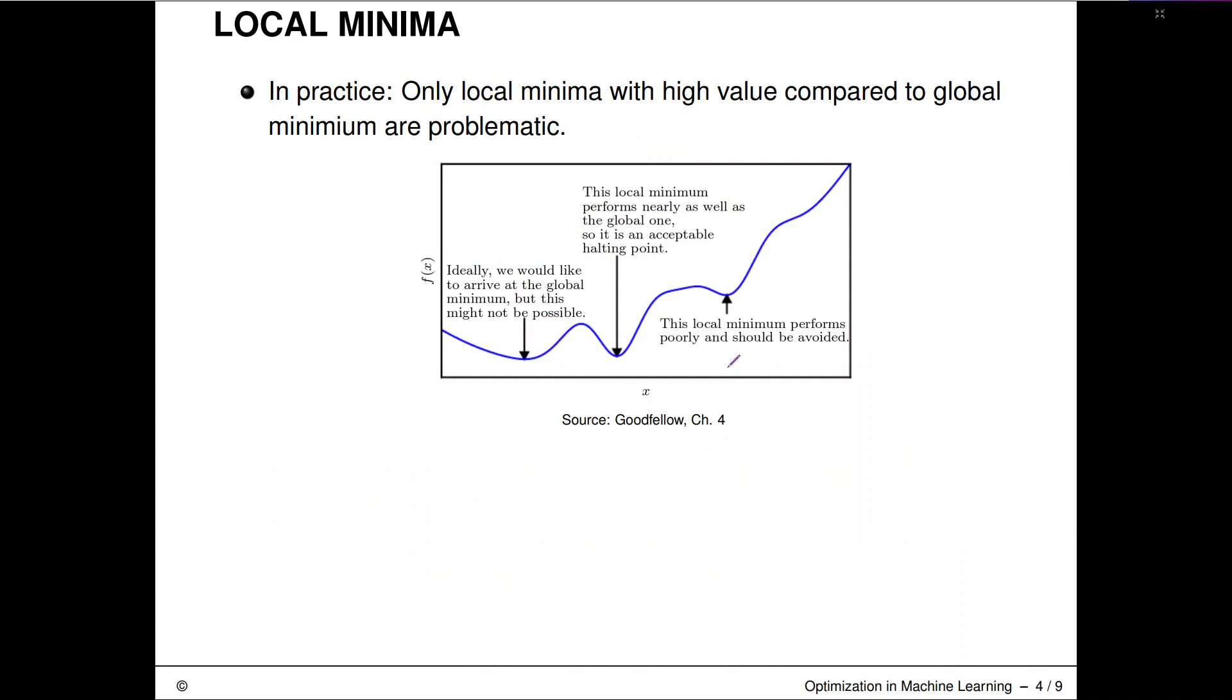If we only care about our objective value, not the exact position of our convergence point in X-space, then only local minima with a high value compared to the global minimum are problematic.